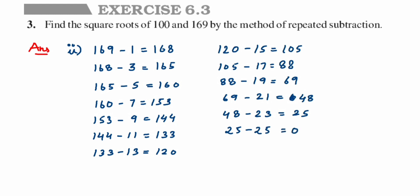We got 0! Let's find out how many odd numbers we took: 1, 2, 3, 4, 5, 6, 7, 8, 9, 10, 11, 12, 13 — we got 13. That means the square root of 169 is 13. So that's it, it was quite a simple method.